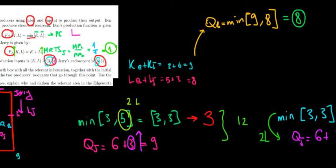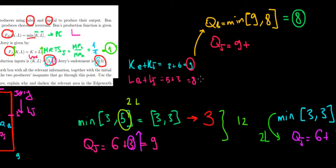Now let's see what would happen if Jerry would produce. If Jerry gets all nine units of capital, his production function is capital plus labor, so nine plus eight equals 17. That's a lot more, so it's wiser to give all the capital and labor to Jerry and produce 17 units.